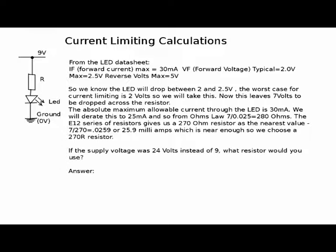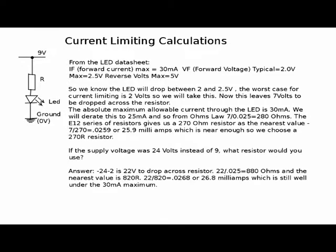If the supply voltage were 24 volts instead of 9, what would you use? 24 minus 2 is 22 volts; 22 divided by 25 milliamps is 880 ohms. The nearest standard value is 820 ohms. 22 over 820 is 26.8 milliamps — still well under the 30 milliamp maximum, so we can use that. Alternatively, you could construct a resistor by adding together two lower-value resistors to get closer to the actual value you want.